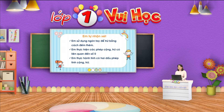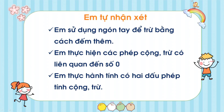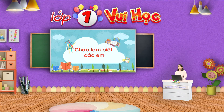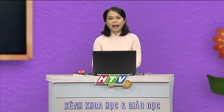Cô vừa hướng dẫn các em học bài tiết 2, em làm được những gì. Sau đây là những nội dung đã học trong ngày hôm nay. Nội dung thứ nhất: em sử dụng ngón tay để trừ bằng cách đếm thêm. Nội dung thứ 2: em thực hiện các phép cộng trừ có liên quan đến số 0. Nội dung thứ 3: em thực hành tính có 2 dấu phép tính cộng trừ. Cô mong rằng tất cả các em đều thực hiện tốt các nội dung của bài học ngày hôm nay. Nếu bạn nào chưa thực hiện được, cô mong các em sẽ rèn luyện thêm nhé. Tiết học của chúng ta đến đây là kết thúc. Cô xin cảm ơn các em đã theo dõi và cô hẹn gặp lại các em ở tiết 3 của bài này.